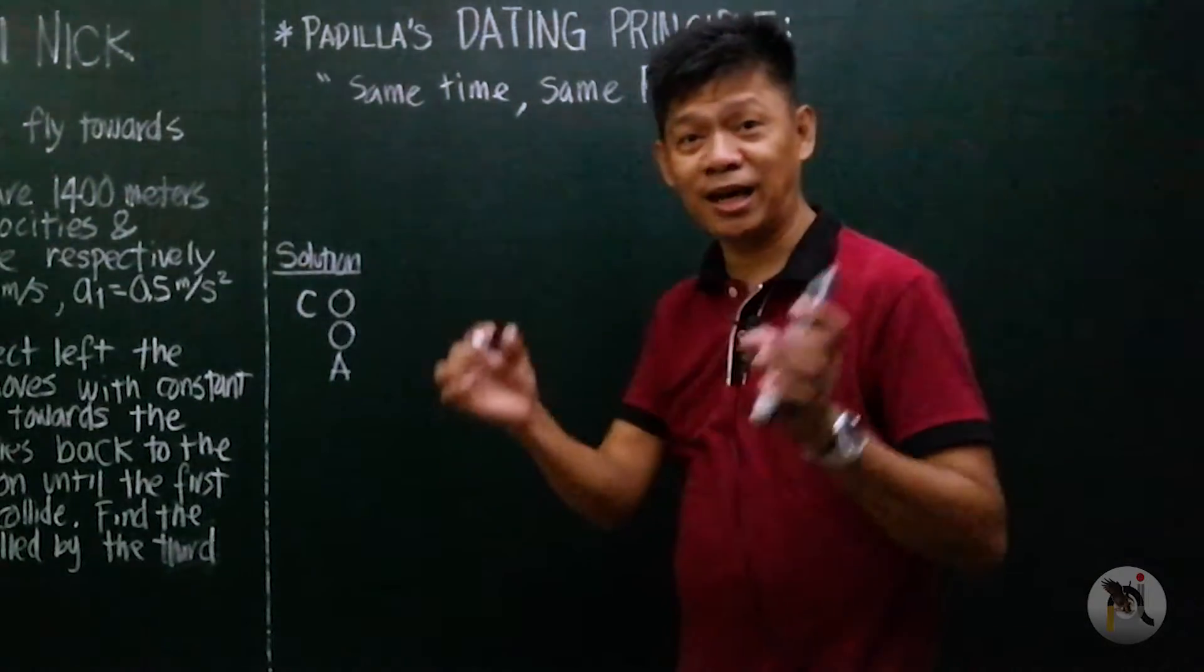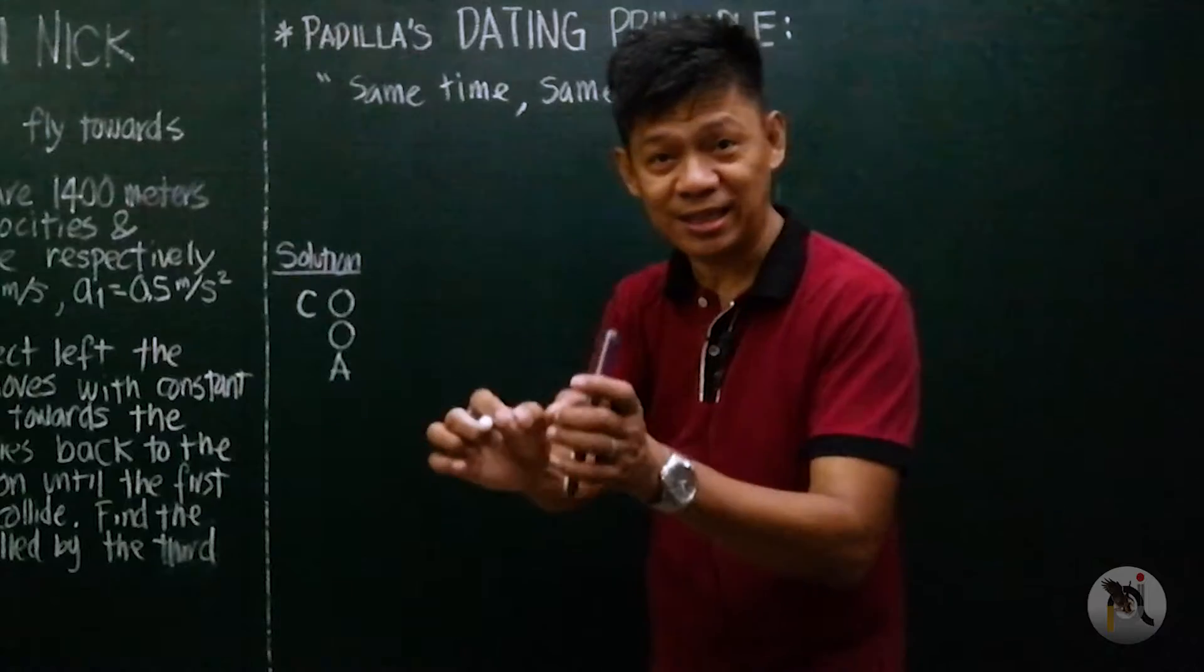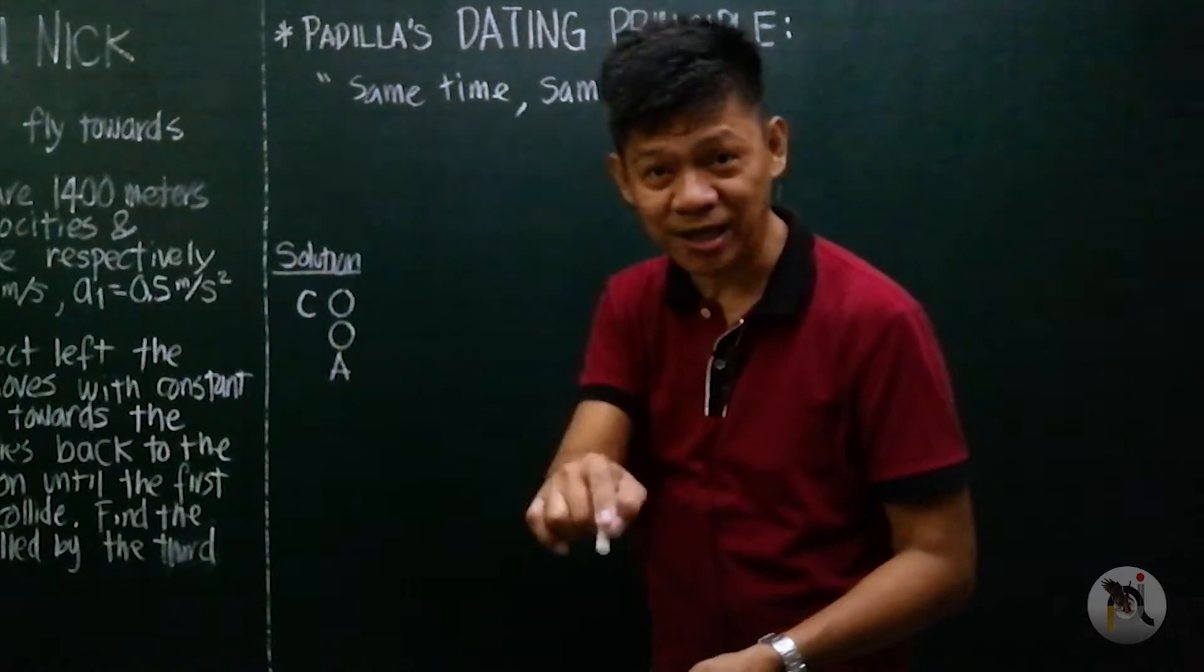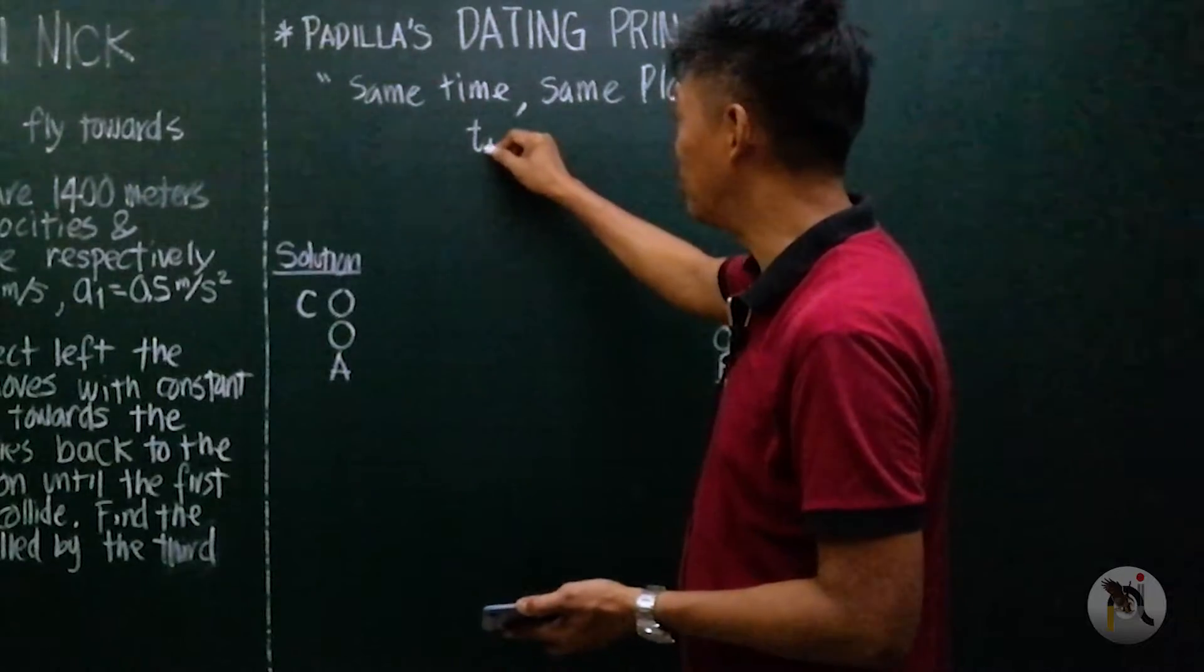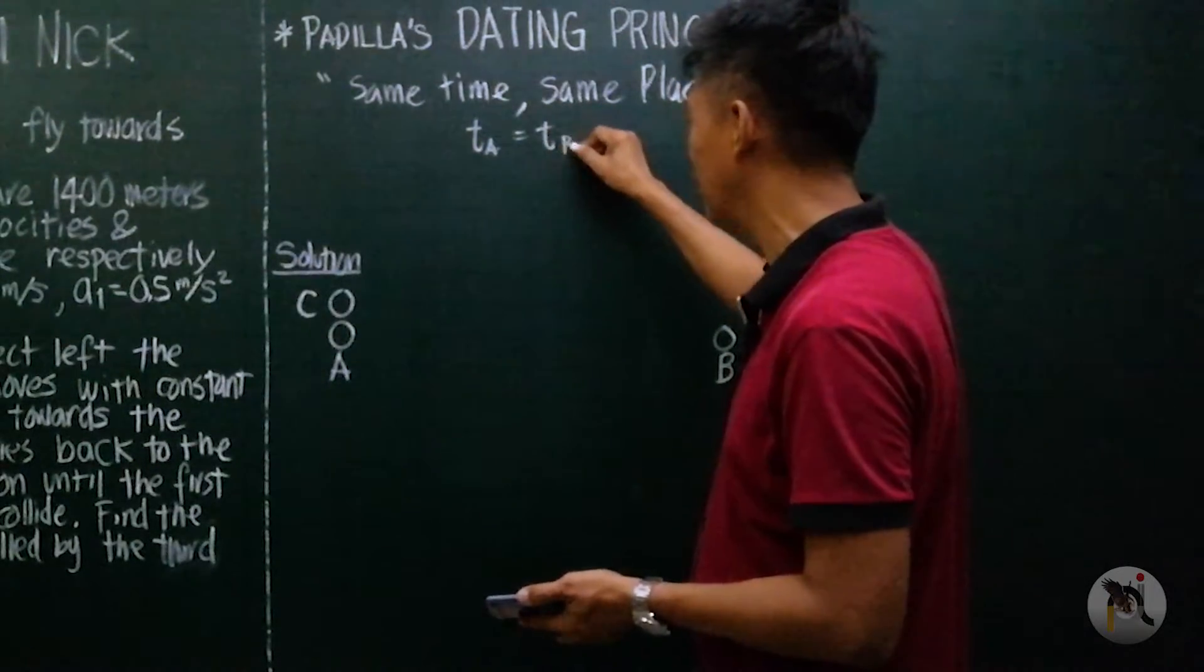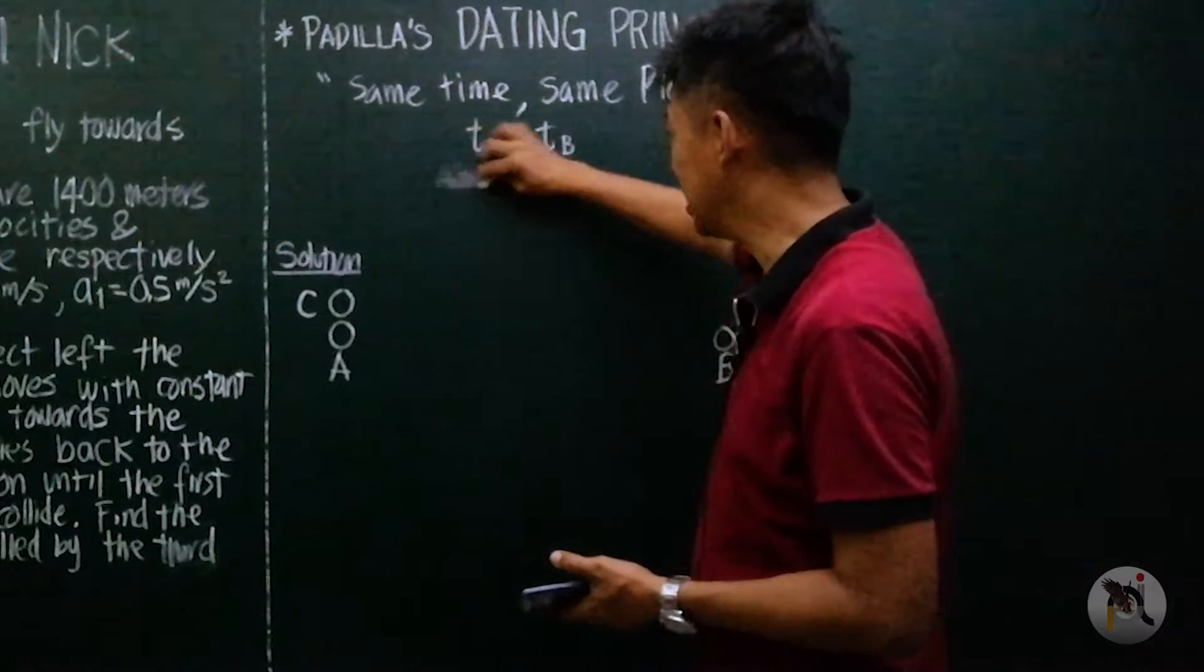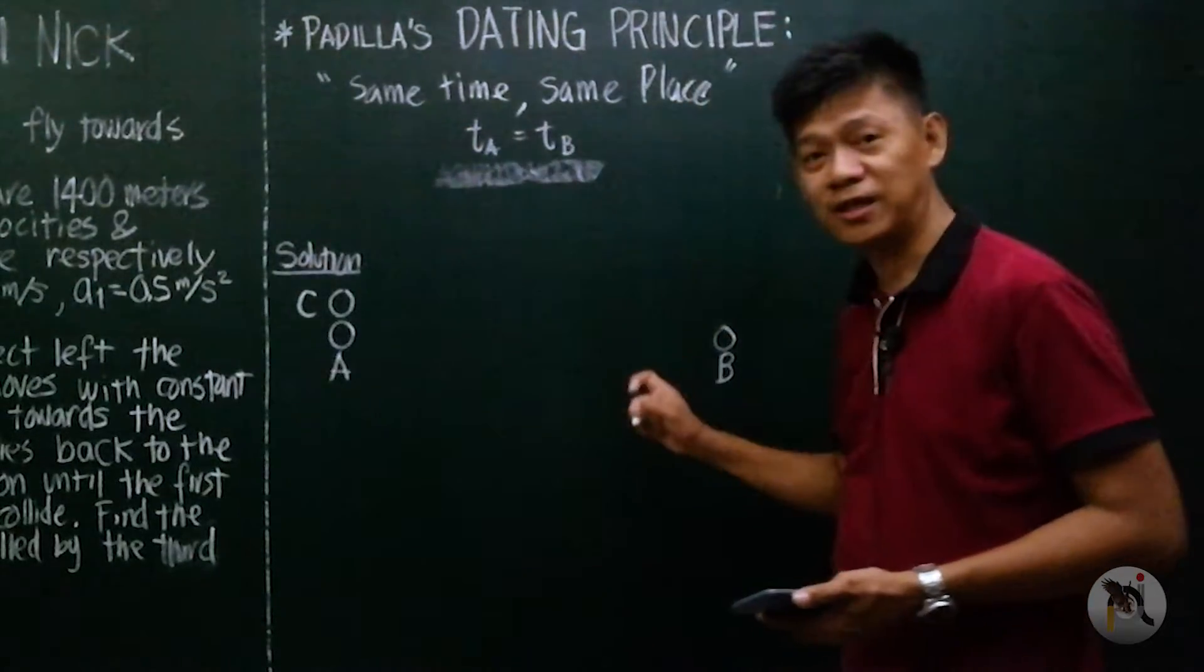It means if there are two objects that will meet at the same place, their time will be the same. T of object A must be equal to T of object B. This is what we are going to use in here.